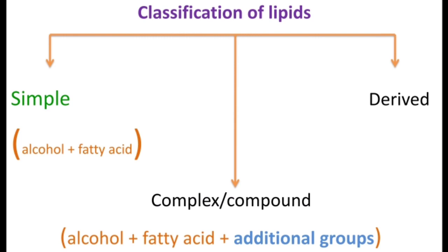Coming to the second group, complex or compound lipids — the name itself indicates they have a complex composition. In addition to alcohol plus fatty acid, they have some other groups, and because of this they are called complex lipids. Coming to the third group, derived lipids — these are lipids which are derived from the simple and complex lipids. Now I will discuss each class in detail, starting with the simple lipids.